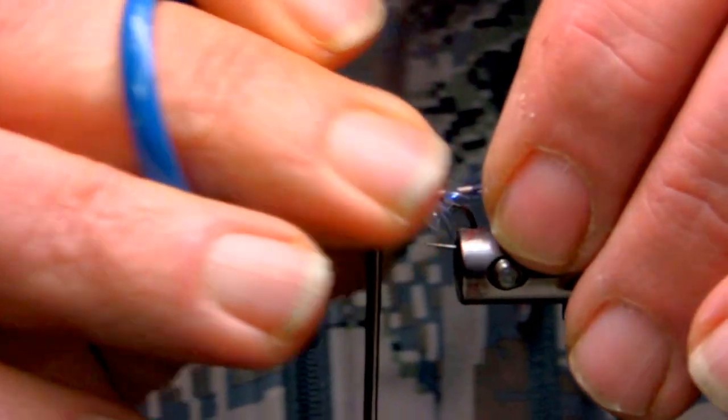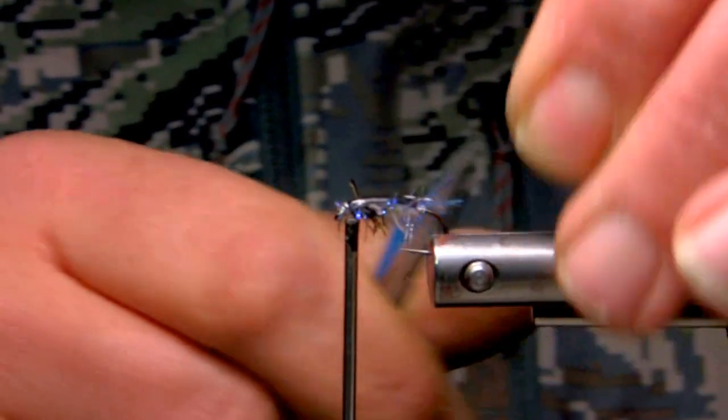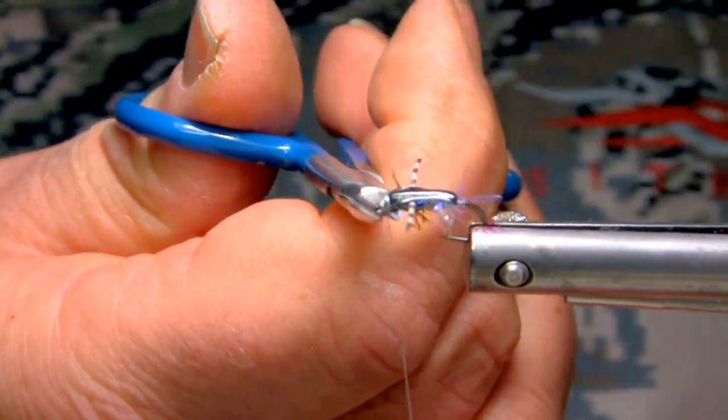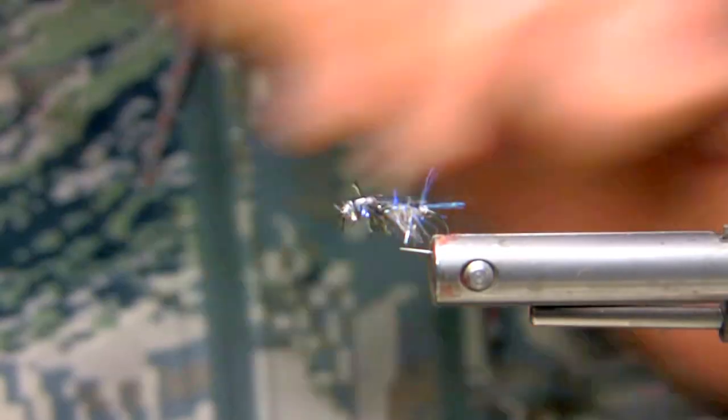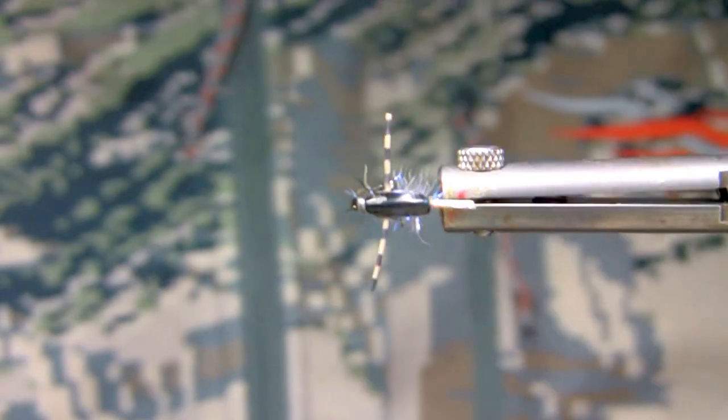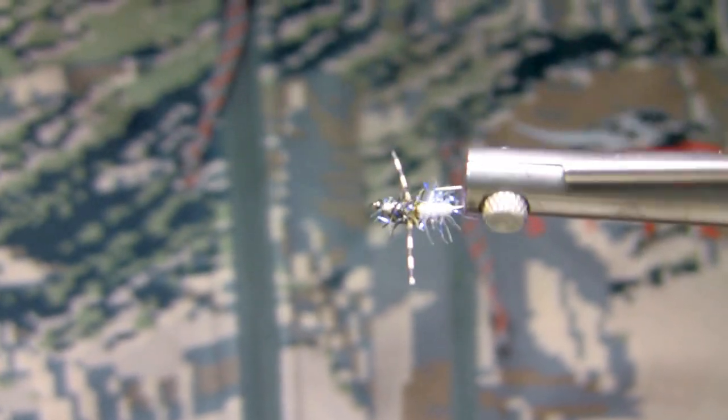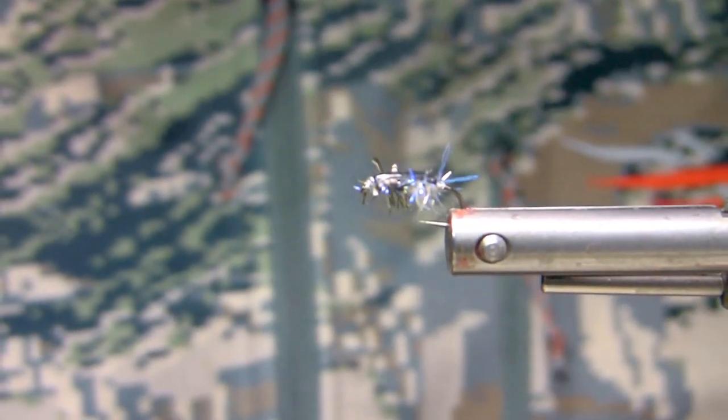So now I'm just going to trim my legs to length, which is tail length. And that is a completed crystal boatman. Hope you enjoy that. Very simple, easy pattern. Very, very effective. Thank you for watching. Have a great day.